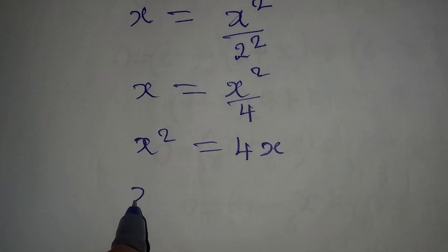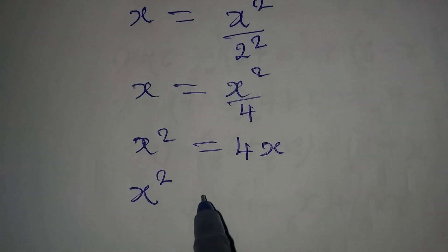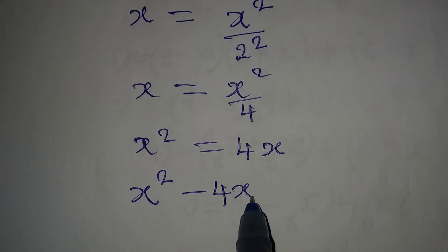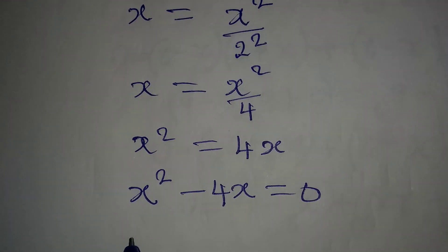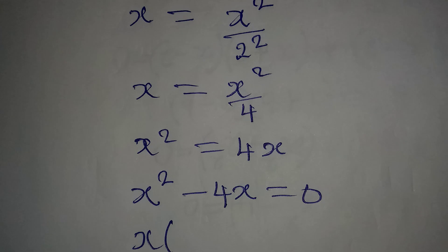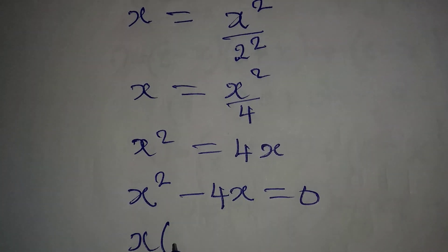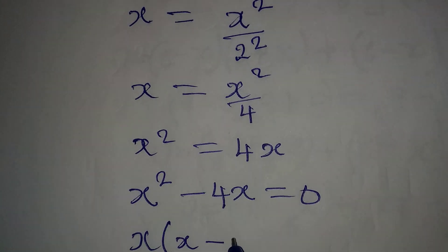So x² - 4x = 0, and this means we can factor out x because it's common. We have 1x, we have 1x over there, and here we have 4.